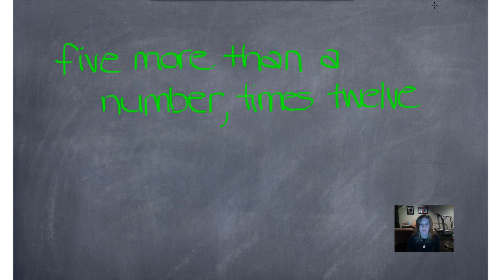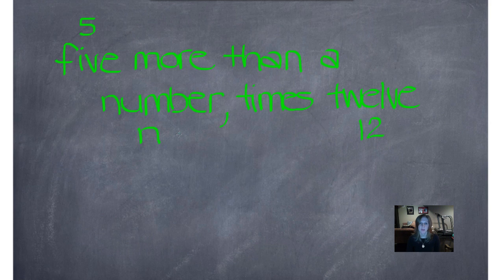Let's look at some important clues. We can write the number five as the number 5, and the word 12 as the number 12. We don't know what this number is, so we're going to use a variable to represent it — I like the variable n, but you can use whatever you want. We know that 'more than' means to add, and 'times' means to multiply.